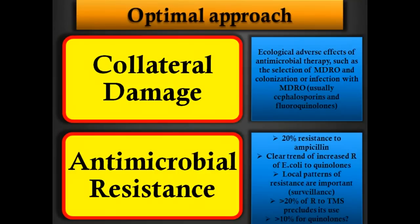For example, if you have an uncomplicated cystitis, you could use imipenem or ertapenem, but the collateral damage would be enormous. It will be effective, but the collateral damage regarding selection of multidrug-resistant organisms is very significant. Collateral damage is usually seen with cephalosporins — especially third-generation — and fluoroquinolones. We see many hospital patients with ESBL-producing strains, mainly due to the use of broad-spectrum cephalosporins.